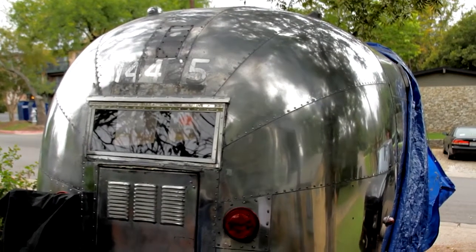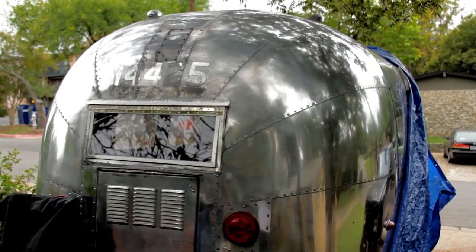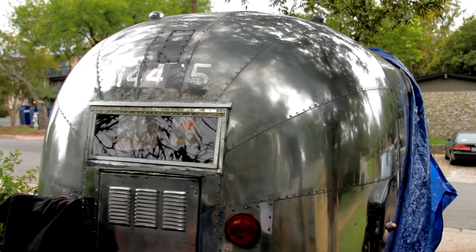This is my Airstream, it's a 1962 Bambi. I just thought I'd show you my method for polishing all of this corrosion that you see here off of it to make it nice and shiny.